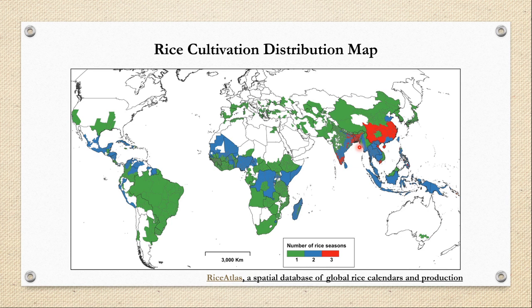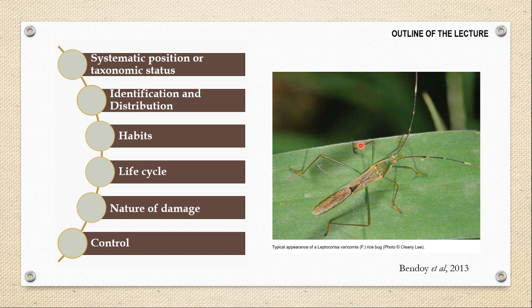Leptocoryza variconis is restricted to this area. To discuss its biology, I am first going to talk about its systematic position or taxonomic status, then how you can identify this species and its distribution. Then I will talk about its habits, life cycle, the ways in which it can damage the crop, and the control measures that can be taken to keep its damage to a minimum level.